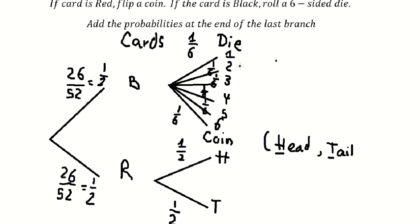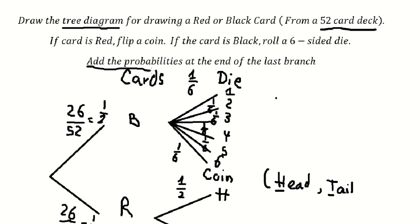Now, after you got all the numbers in here, we need to find the probability at the end. So we have 1 over 2 multiplied by 1 over 6. So this is about 1 over 12. And now we can write 1 over 12 for all of them in here.